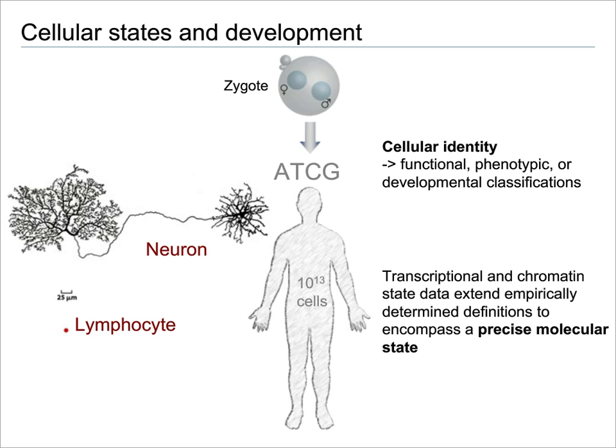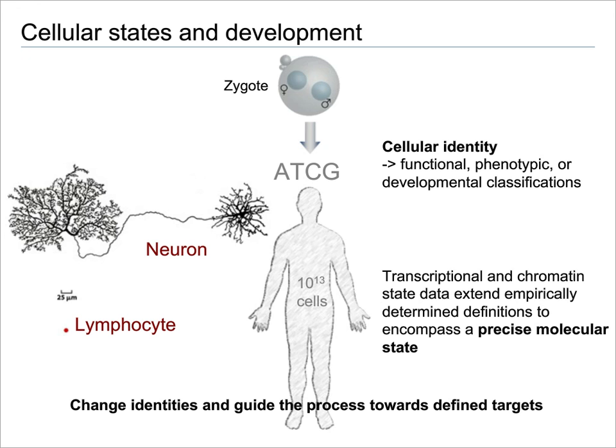Over the past decade, we and many others have extended these empirical definitions using transcriptional chromatin data to come up with a more precise molecular state description. This becomes very powerful when looking into the possibilities of changing cellular identities, and also very important towards guiding the process towards defined targets, as well as characterizing the eventual cell types being created.